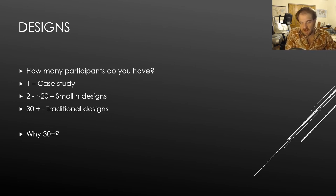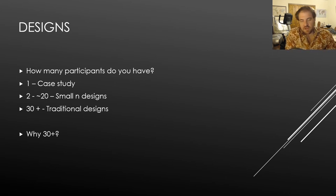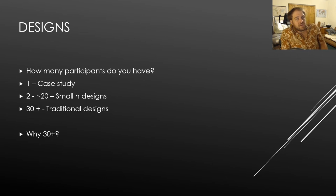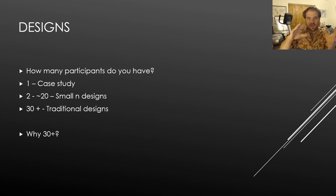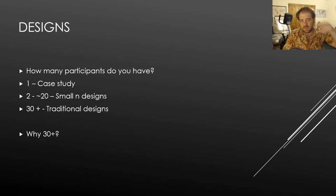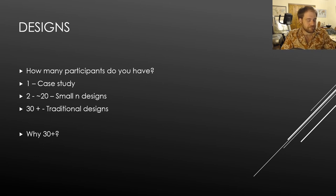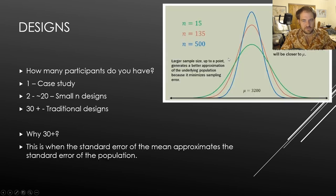Typically you want somewhere between thirty and one hundred people per group. If you need a hundred thousand people to detect an effect, that's a very small effect. If there's something to detect you'll probably detect it with thirty to a hundred. It's manageable — sixty people if you have two groups, ninety for three — and that means you can actually publish science before you're ancient.